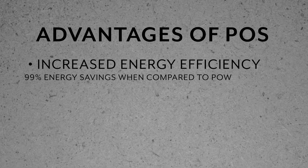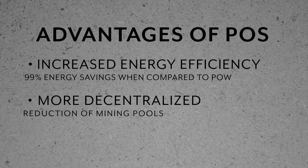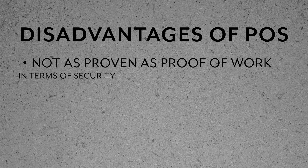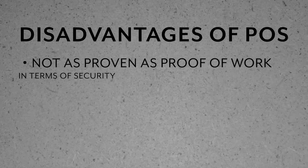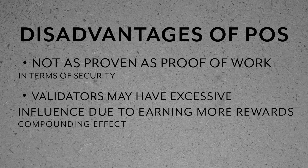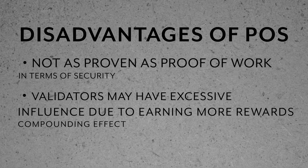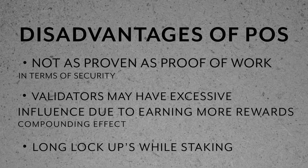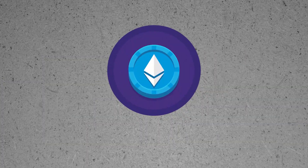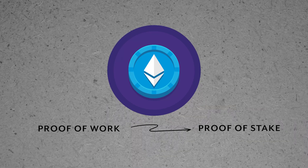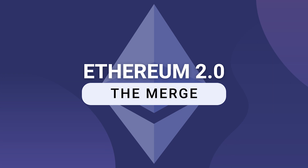Some advantages of a proof of stake network include better energy efficiency — up to 99% energy savings compared to proof of work. Second, a PoS network is more decentralized due to the reduction of mining pools. Third, it is much more scalable than a proof of work system. However, disadvantages include that it is not as proven in terms of security as proof of work, validators with large holdings can have excessive influence, and some PoS cryptocurrencies require locking up your coins for a minimum period of time. It is also worth mentioning that Ethereum was moving to a proof of stake network from proof of work in September 2022 in an event called the Merge.